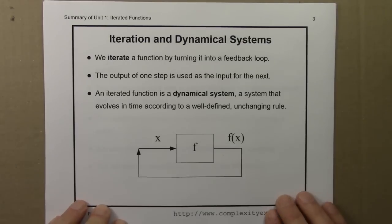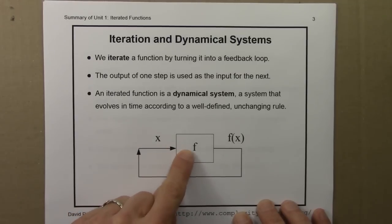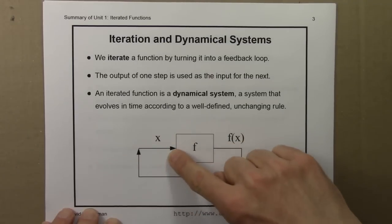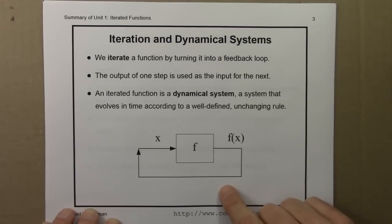Then we studied iterating functions. We iterate a function by turning it into a feedback loop. We took a static situation, a function, and we made it dynamic by looping it around. So we start with some number, we apply f to it, we get a new number, then we use that number as input, apply f again, and so on.